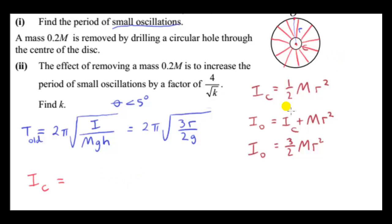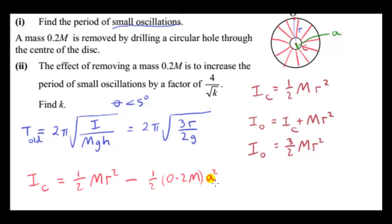The overall disk has moment of inertia ½MR² from part 1. The hole is in the shape of a uniform disk with mass 0.2M, giving moment of inertia ½(0.2M)A², where A is the radius of the hole. To find A in terms of R, we note that for a uniform disc the mass is proportional to the area. So the mass ratio 0.2M/M equals the area ratio πA²/πR², giving A² = 0.2R².